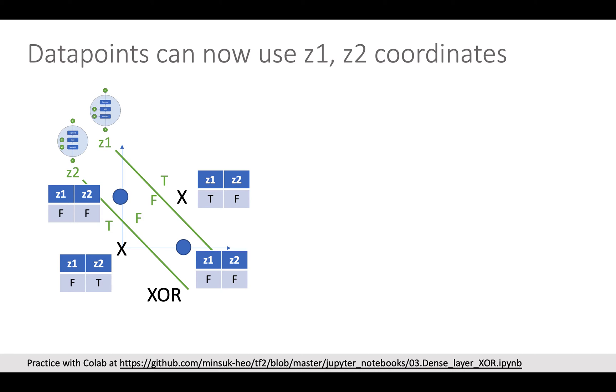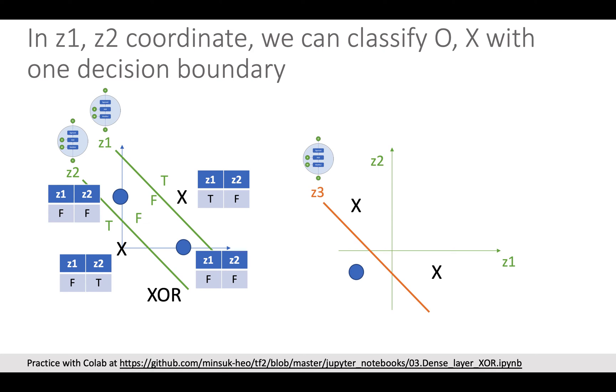For better understanding, I put the table having the outputs from Z1 and Z2. Now, let's have one other coordinate which uses Z1 and Z2 as dimensions. You can see the right side chart where Z1 and Z2 are axes. There are two O's overlapped and the two X's are scattered. In order to classify O and X from this dimension, we need one more decision boundary. That is, we need one more node in this dimension. Then we can classify XOR dataset clearly.